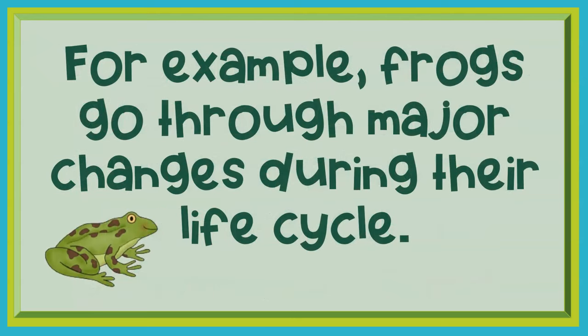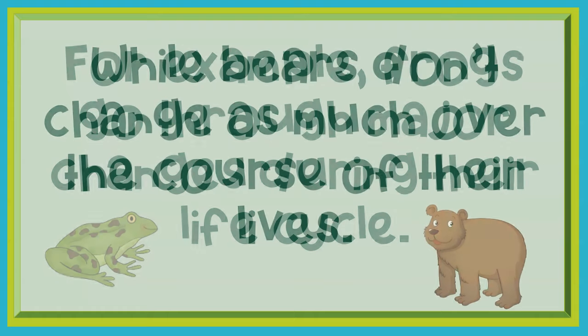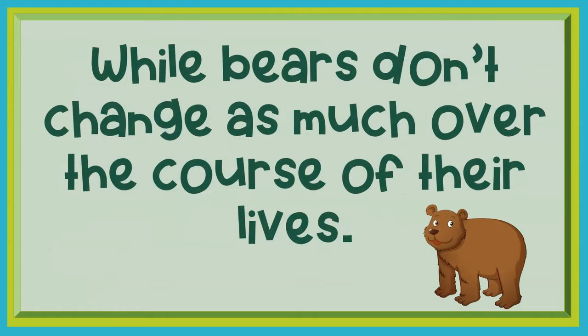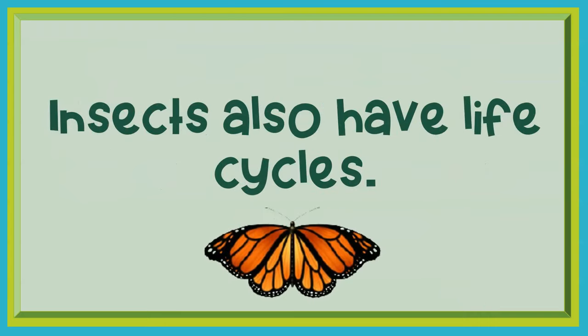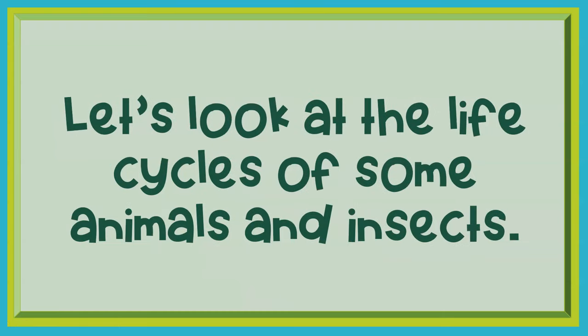For example, frogs go through major changes during their life cycle, while bears don't change as much over the course of their lives. Insects also have life cycles. Let's look at the life cycles of some animals and insects.